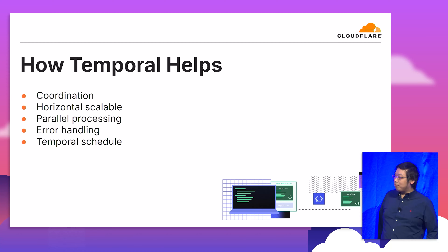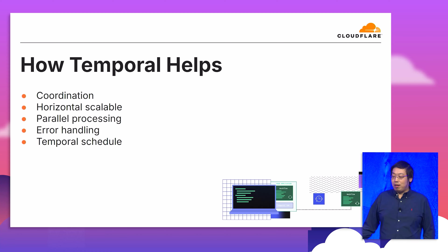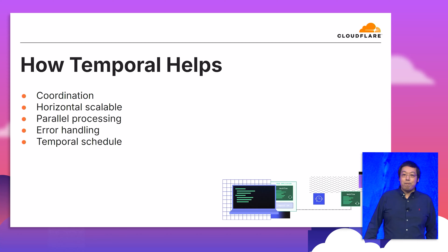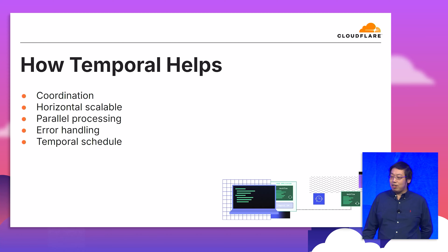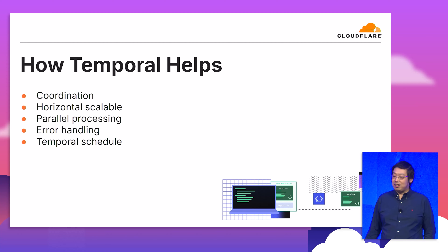Temporal has really helped us make our services scalable. With Temporal, we are able to horizontally scale the Temporal workers and have thousands of pods running in Kubernetes to do those checks. With the parallelism Temporal provides, we are able to process all production readiness checks in less than two hours rather than days. Temporal also provides out-of-the-box error handling and automatic retries.